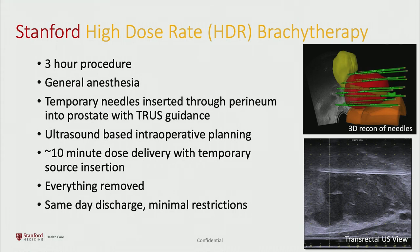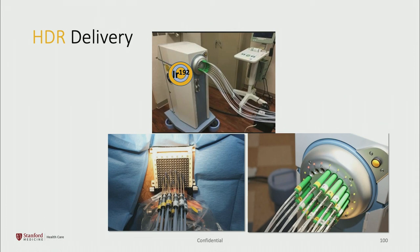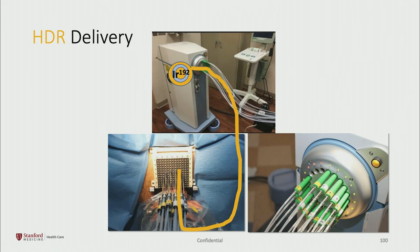The machine that controls the internal radiation source is called an afterloader. The radiation source travels from the machine through catheters into the needles that are placed in the prostate. It stays in each needle for a number of seconds, goes back into the machine, moves to a different needle, stays there for a number of seconds, and then the treatment is complete.